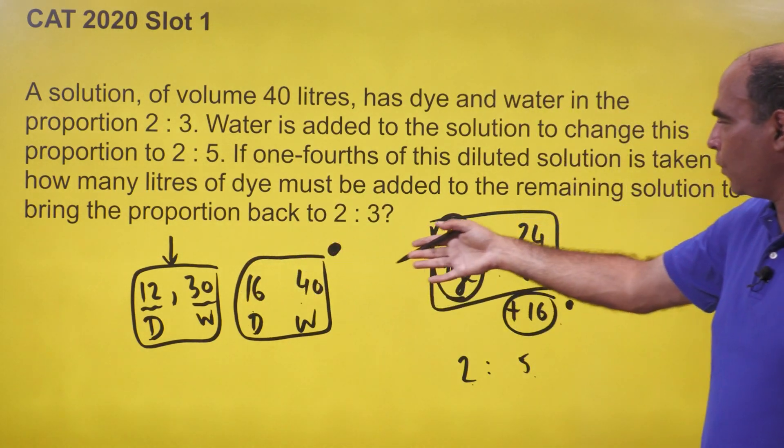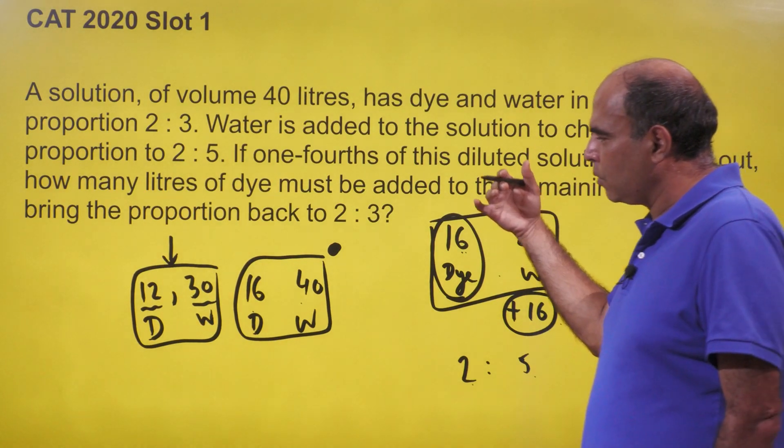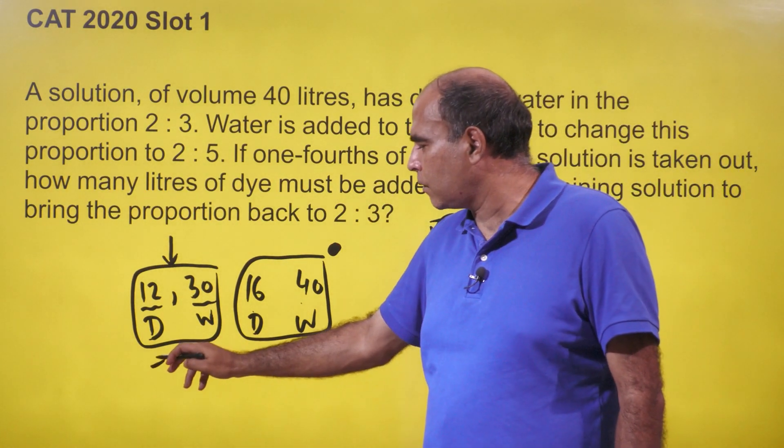This is the final mixture that you have. How many liters of dye must be added to the remaining solution to bring the proportion back to 2 is to 3? You need 8 liters of dye.